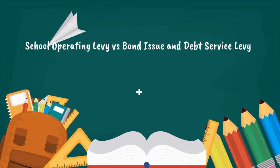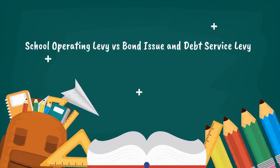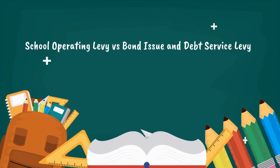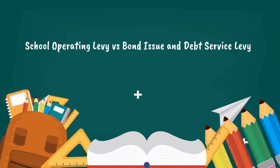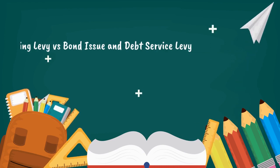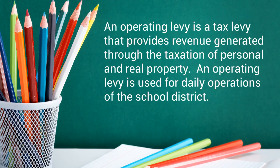School Operating Levy vs. Bond Issue and Debt Service Levy. An operating levy is a tax levy that provides revenue generated through a taxation of personal and real property. An operating levy is used for daily operations of the school district.